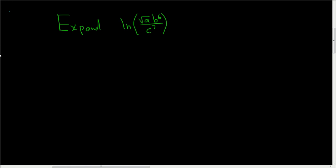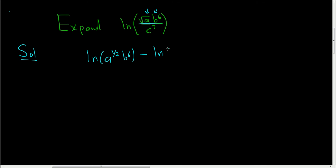We're being asked to expand this, so let's go ahead and do it. We'll start by using the quotient rule because we have a quotient. So this will be the natural log of the square root of a times b to the 6th. Now I'm going to write the square root of a as a to the 1 half — because later on we'll need to do it anyways, so this might make it easier — minus the natural log of c to the 7th.